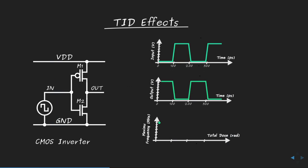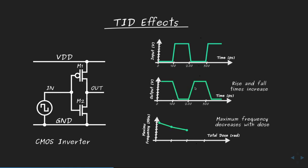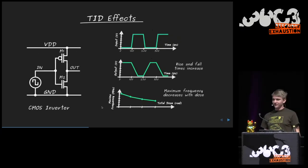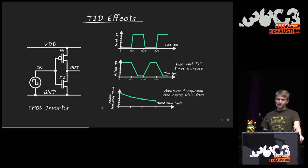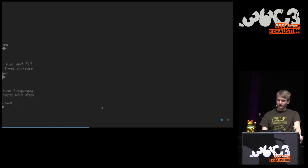The typical effect of TID on a simple inverter circuit — consisting of two transistors — is that as the transistors accumulate dose, the edges of the output signal get slower; the transistors take longer to turn on and off. This limits the maximum operating frequency of the circuit. If the maximum frequency degrades over time, at some point it will fail because the frequency drops too low for the intended application.